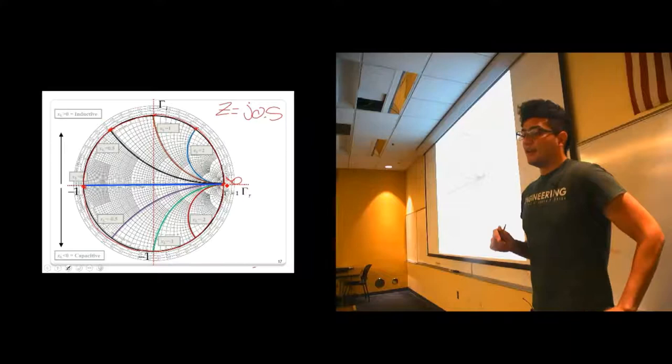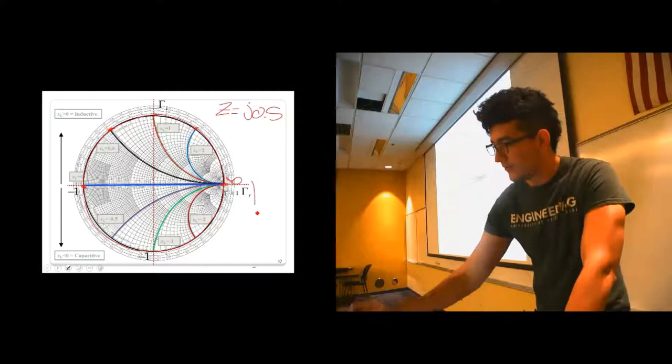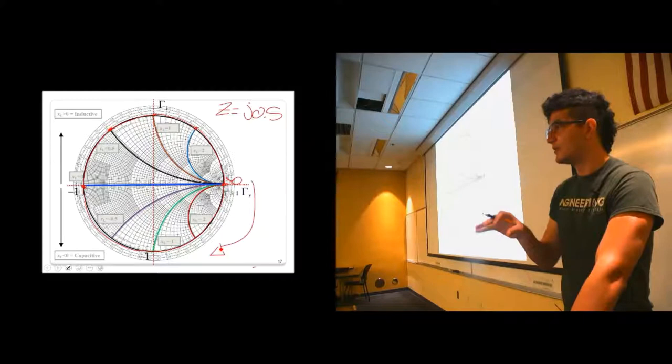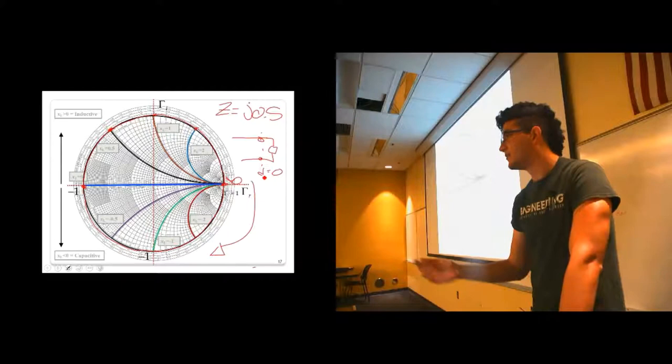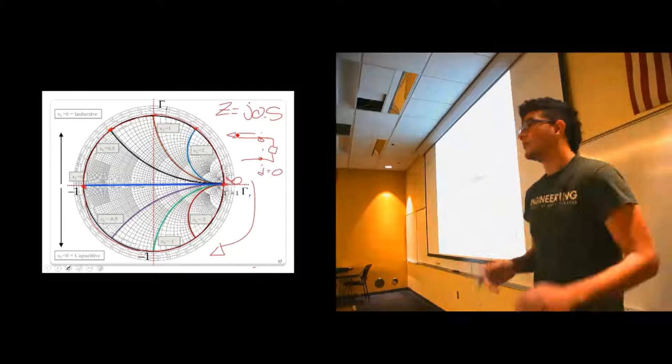So usually by convention, you move in this direction. So move from this point to this point. You move clockwise. So clockwise around the Smith chart, it means that you're moving towards the generator. Because we're defining our reference location here, a reference coordinate system, if you will, at this point. So if you move in this direction, you're moving towards the generator. If you move in this direction, you're moving towards the load.